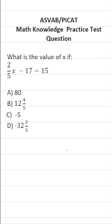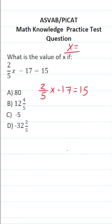This math knowledge practice test question for the ASVAB and PyKET says: what is the value of x if two-fifths x minus 17 equals 15? We're going to be solving the equation two-fifths x minus 17 equals 15. We want to get x equal to something by itself.